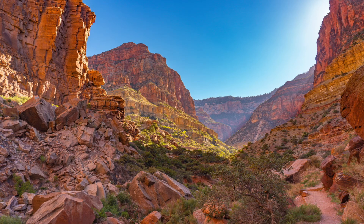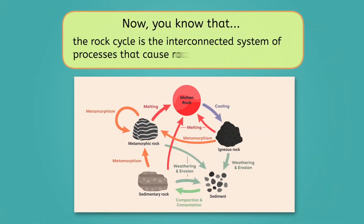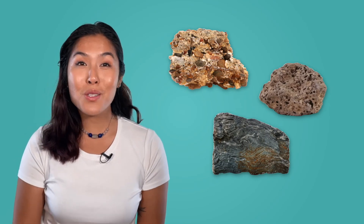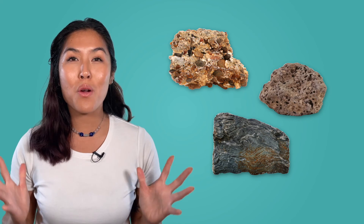The rocks at the bottom of a canyon today could become the peak of a mountain in the future. Now you know that the rock cycle is the interconnected system of processes that causes rocks to change over time, and that those processes include melting, cooling, weathering, erosion, compaction, cementation, and metamorphism. Be sure to check out the practice questions and extension activities that go with this lesson to learn even more about how the rock cycle shapes our planet.